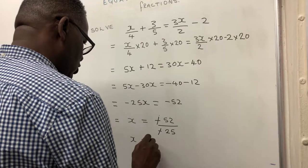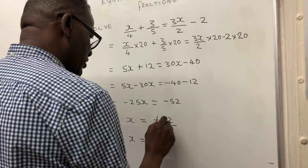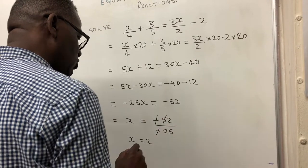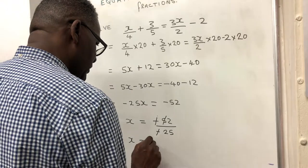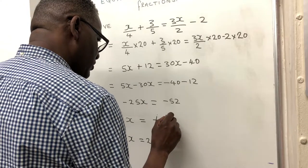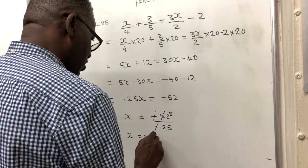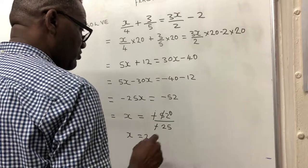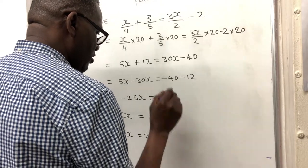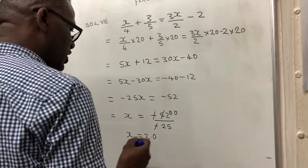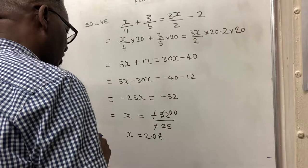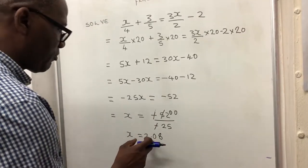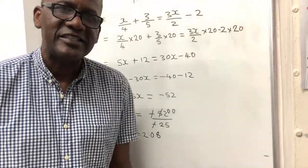25 into 52 goes 2, and that leaves me with 2. Can 25 go into 2? No it can't, so I put a point there and I add a 0. 25 into 20 doesn't go, so that's where the 0 comes from. So I add another 0. 25 into 200 goes 8. So my final answer is x = 2.08. Thank you.